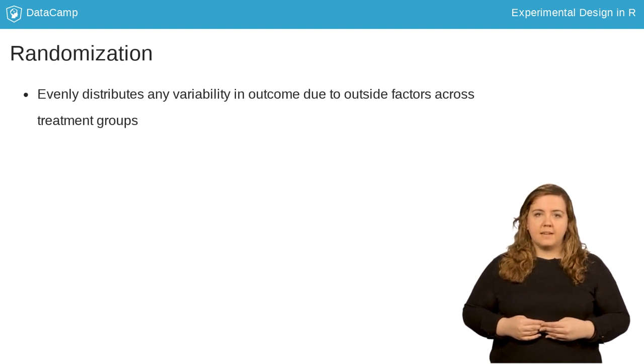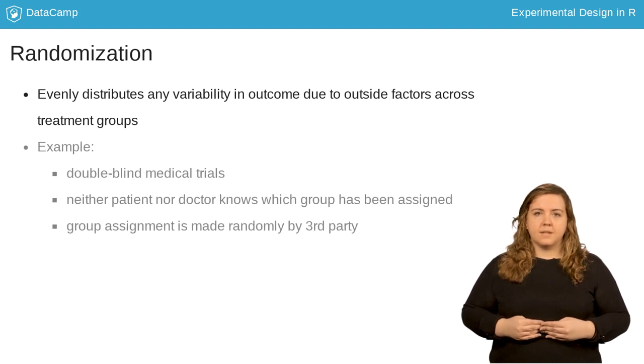Randomization is a key tenet of any experiment. Randomization helps ensure that variability in outcome due to outside factors that we're not studying in an experiment are evenly distributed among treatment groups. One example of randomization is double-blind medical trials, where neither the patient nor the researcher knows if the patient is receiving treatment or not. The patient is randomized by a third party into one of the two groups.